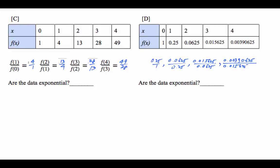In table C, you could tell that the ratios are not the same. So that's not a geometric sequence, which means it is not exponential. But in table D, that's actually equal to 1/4, equal to 1/4, equal to 1/4, and equal to 1/4.